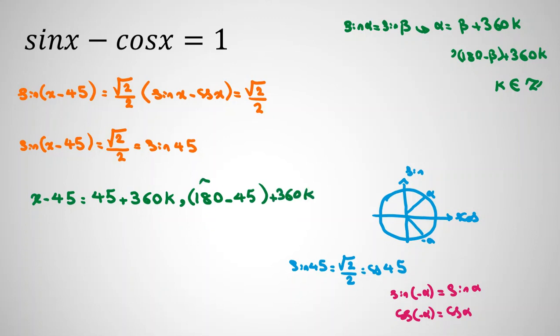So 180 minus 45 is 135. Now we add 45 to both sides. It will be 90 plus 360k. And 45 plus 135 is 180 plus 360k.